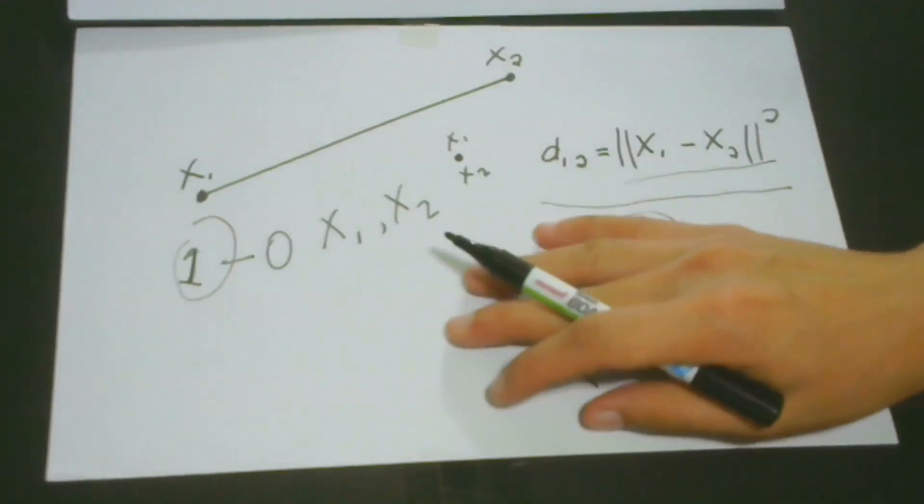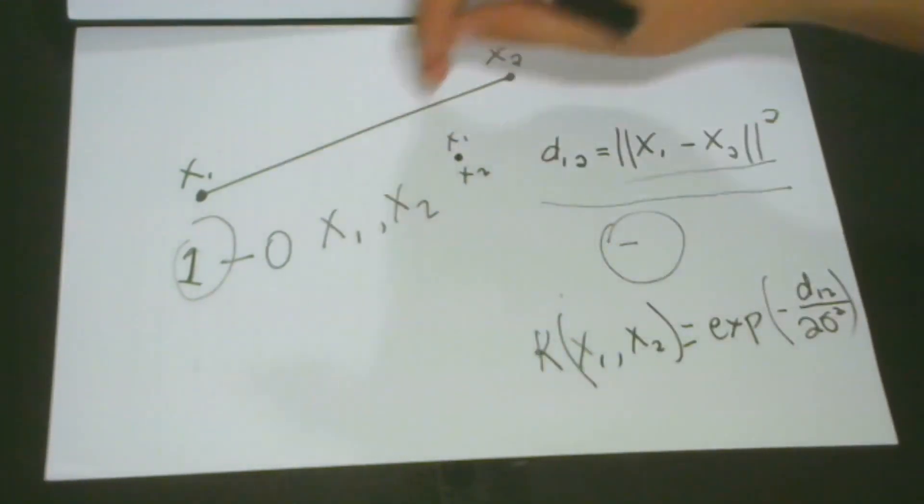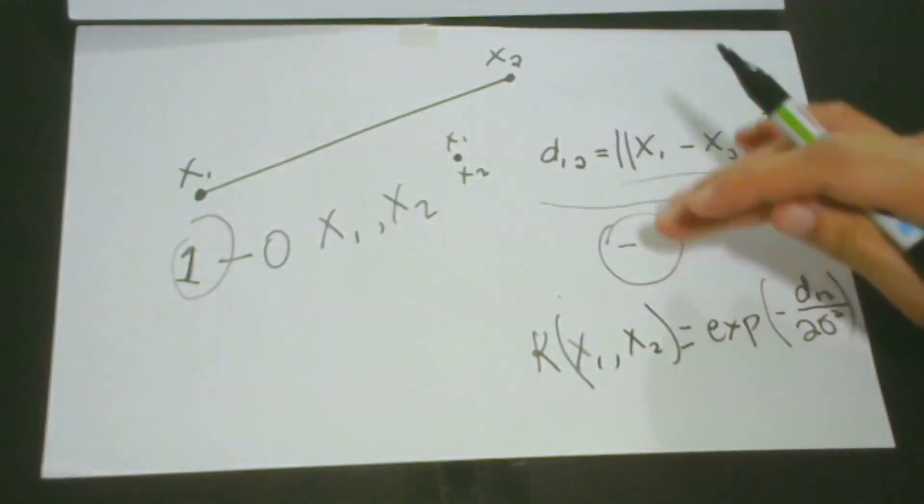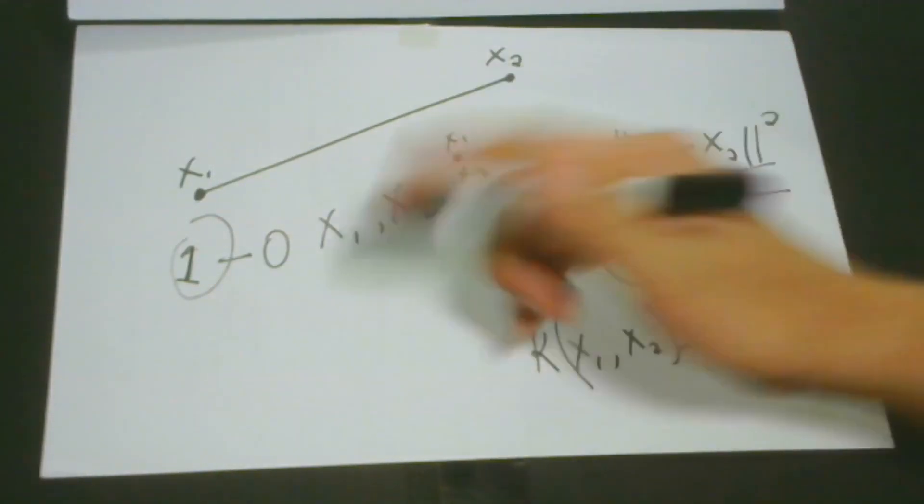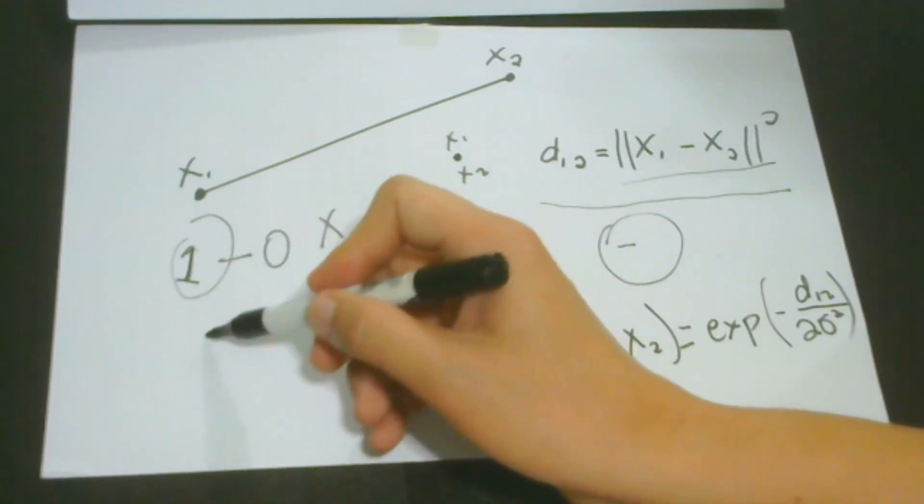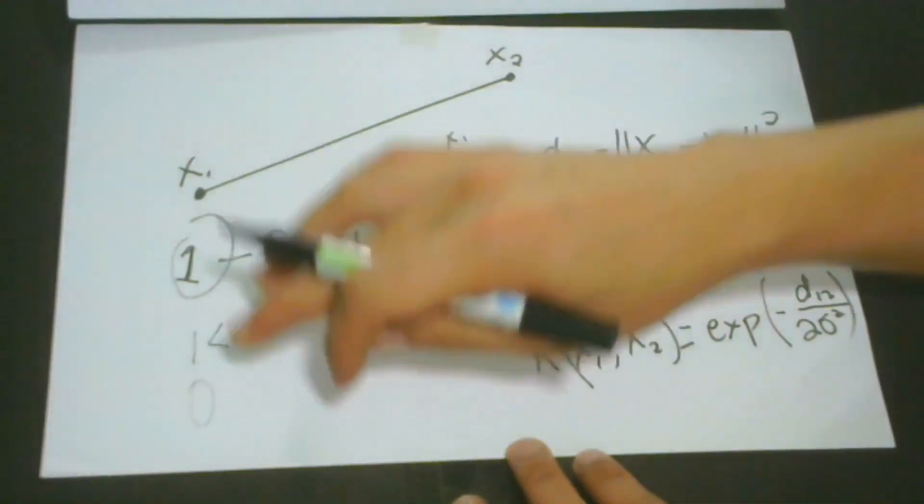And maybe you would like to ask me, what if when there is some distance between x1 and x2, what would be the value of the kernel? So in this case, of course, the value would always be less than 1. And because the value is less than 1, it can be closer to 0. And what would be the implication of this value?